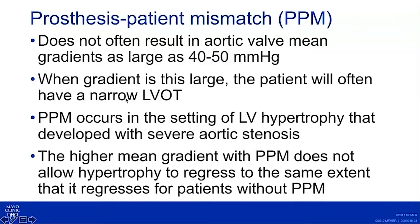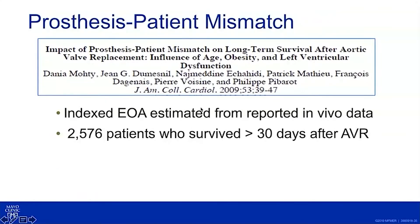Often the patient has a narrow left ventricular outflow tract, not just at the annulus level but throughout — not a real tight tunnel, but it doesn't expand as much as it should. The reason PPM matters most in the long run is that it always occurs in aortic stenosis patients who are small with established hypertrophy from AS. The higher residual gradient doesn't allow that hypertrophy to regress as it would with a normal gradient and normal valve area.